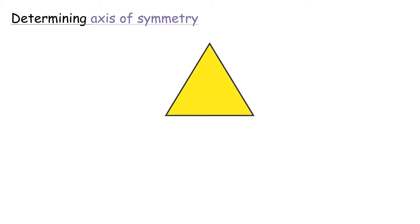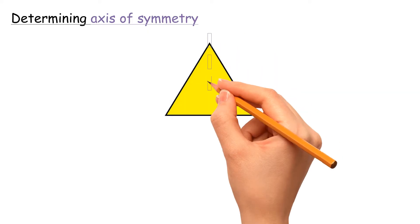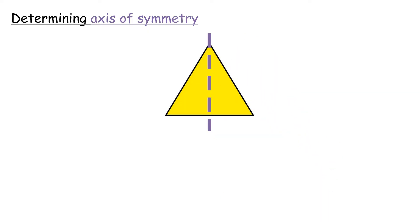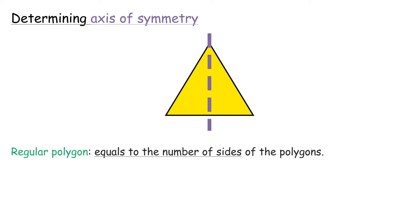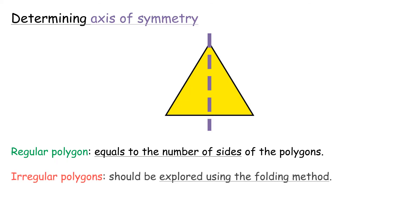Determining Axis of Symmetry: A line of symmetry passes through a shape so that each side is a mirror image. When the shape is folded in half along the axis of symmetry, the two halves match up. The number of axes of symmetry for a regular polygon is equal to the number of sides. For irregular polygons, the number of axes of symmetry should be explored using the folding method.